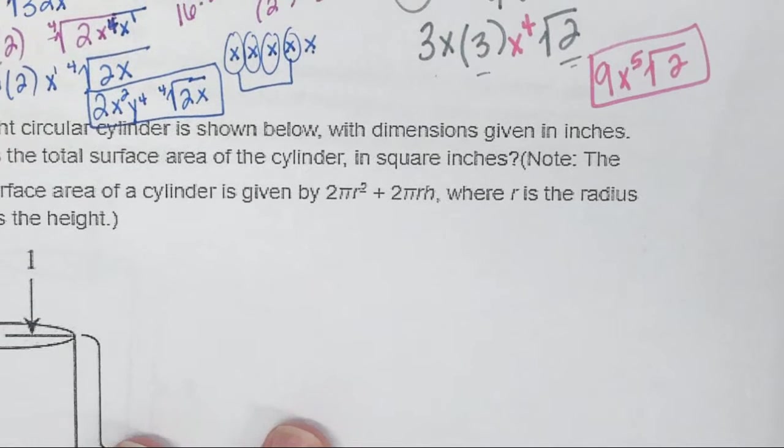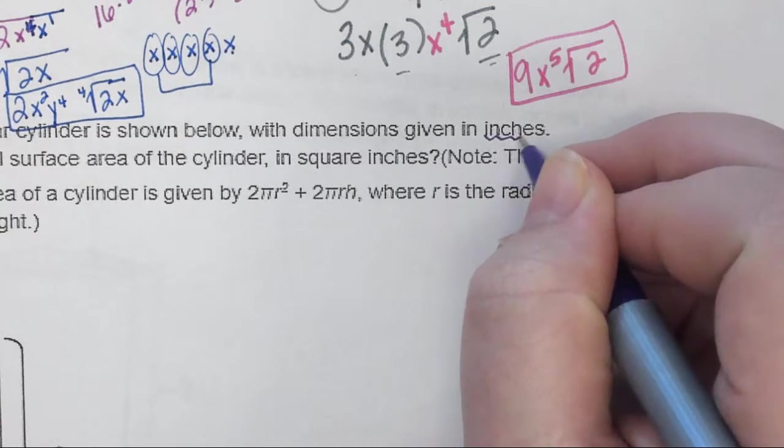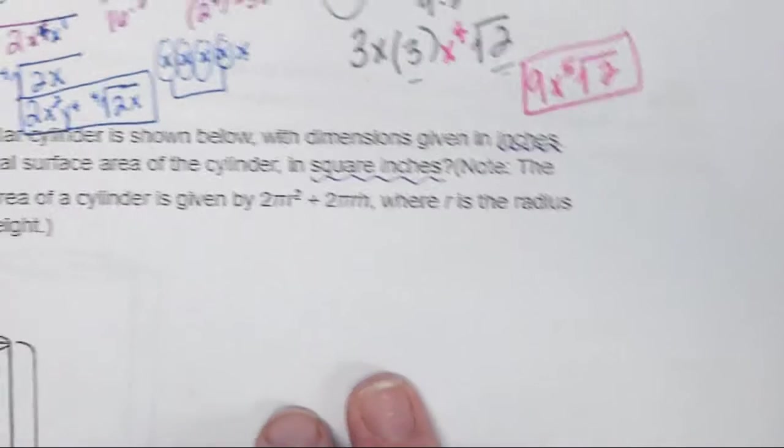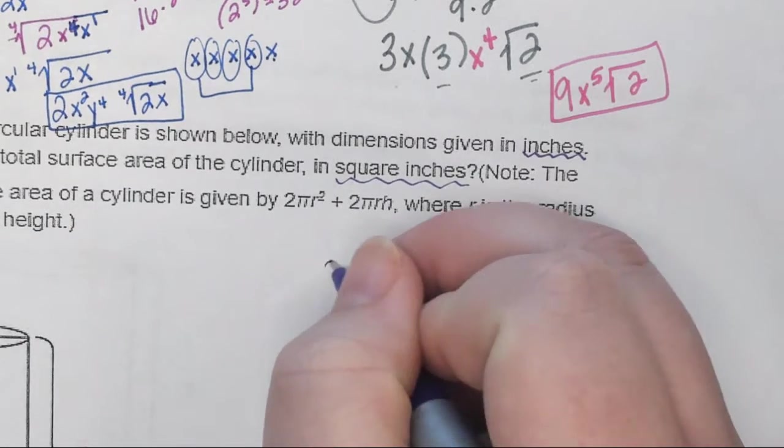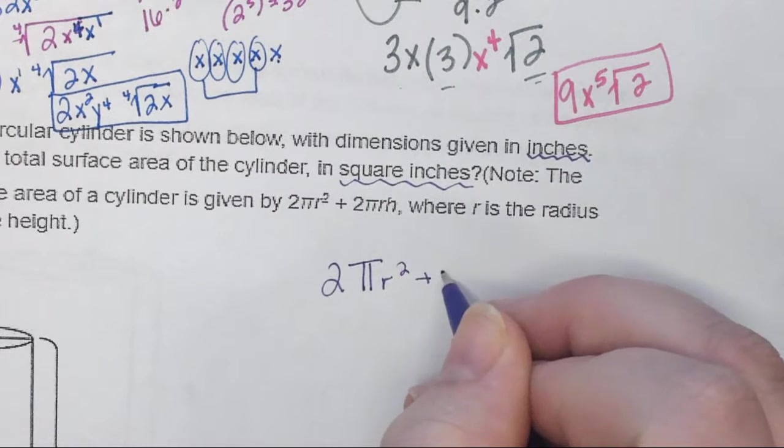Okay, so our problem today is about a cylinder. A right circular cylinder is shown below with dimensions given in inches, which you need to pay attention to because sometimes they make you convert. Thankfully, not this one. It says, what is the total surface area of the cylinder in square inches? It would have been a problem if they had said yards or something. We would have had to do some unit conversions, but thankfully, we don't.